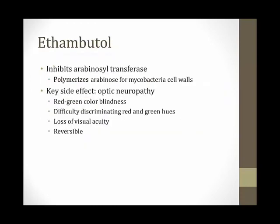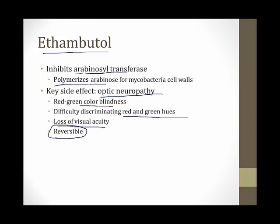Ethambutol inhibits arabinosyl transferase, an enzyme mycobacteria use to polymerize arabinose to create their cell walls — blocking this kills the bugs. A key side effect is optic neuropathy: patients can develop color blindness, difficulty discriminating red and green hues, and sometimes loss of visual acuity. This is usually reversible when the drug is stopped.